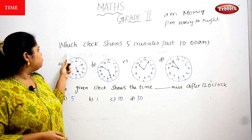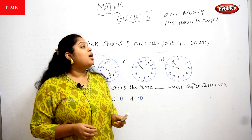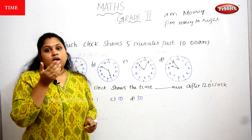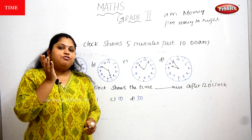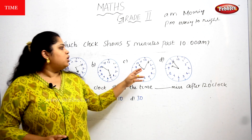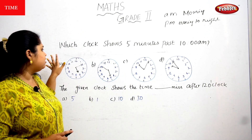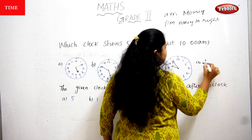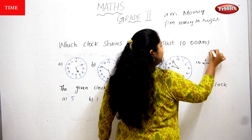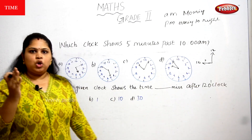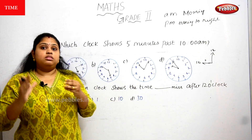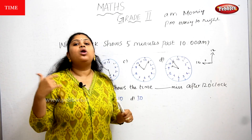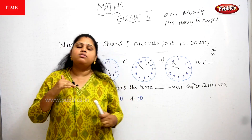So what is the question asking? '5 minutes past 10 AM' — past means a finished time, the time which has already passed. Generally, 'past' means the action which is done already, the action which is finished.